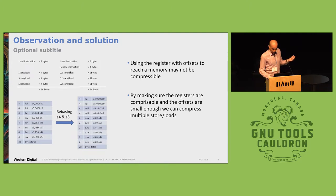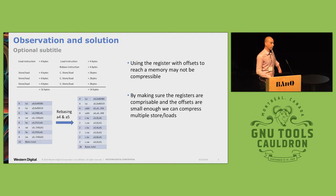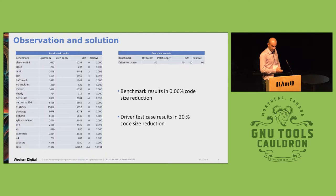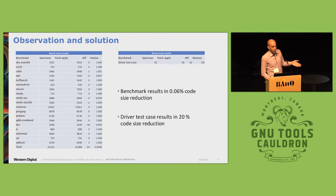So we did that. We also have a penalty of adding a new instruction for each sequence of load and store. To compensate, we found that only if we have three sets of stores or loads in the same basic block, we can rebase with a saving in code density. When we ran the benchmarks, in our test case we had 20% code reduction, while in the benchmarks we got less than 0.1% — actually 0.06%.